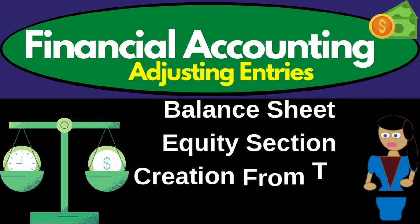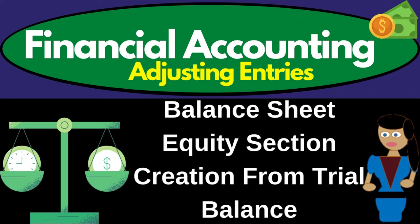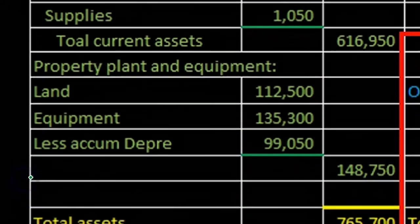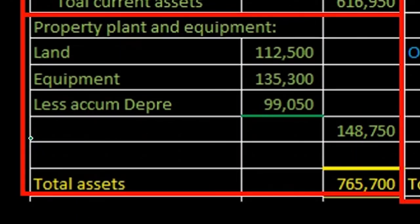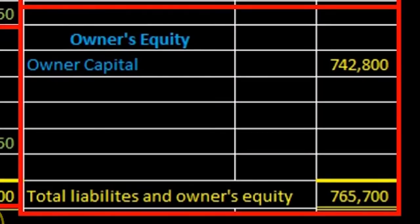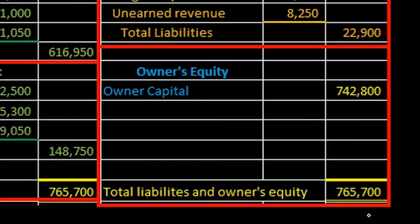Hello, in this lecture we're going to be creating the equity section of the balance sheet. In prior lectures we have taken a look at the current asset section, the property plant and equipment section, and then the liability section. This will be rounding out the balance sheet where we will finally get to total assets being equal to total liabilities and equity, representing the double entry accounting system in terms of the balance sheet and the accounting equation.